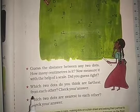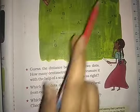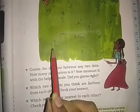Next question is: which two dots do you think are farthest from each other? Check your answer. So first of all we will check. In my opinion, dot G and M and G and K both are farthest from each other.